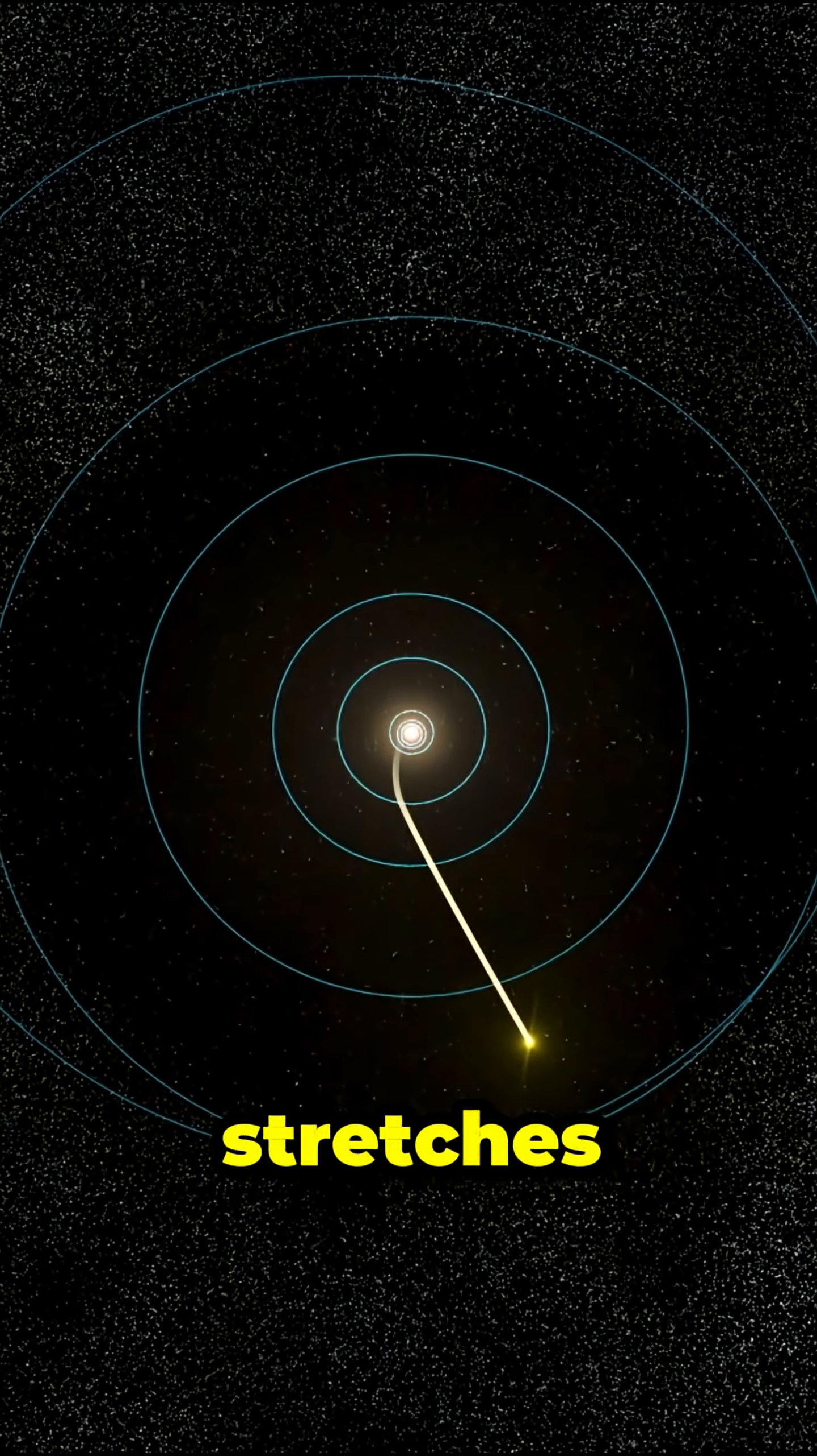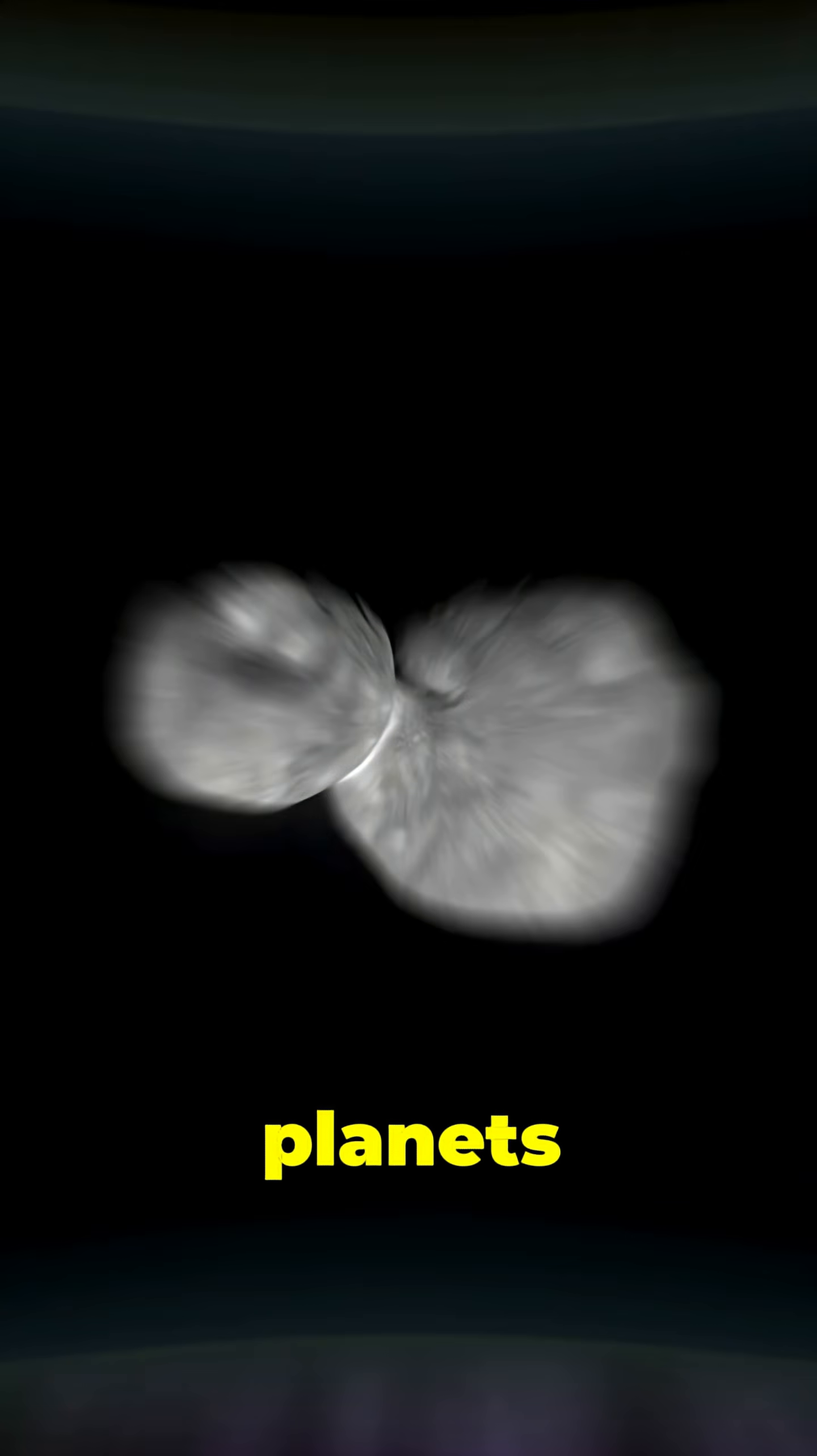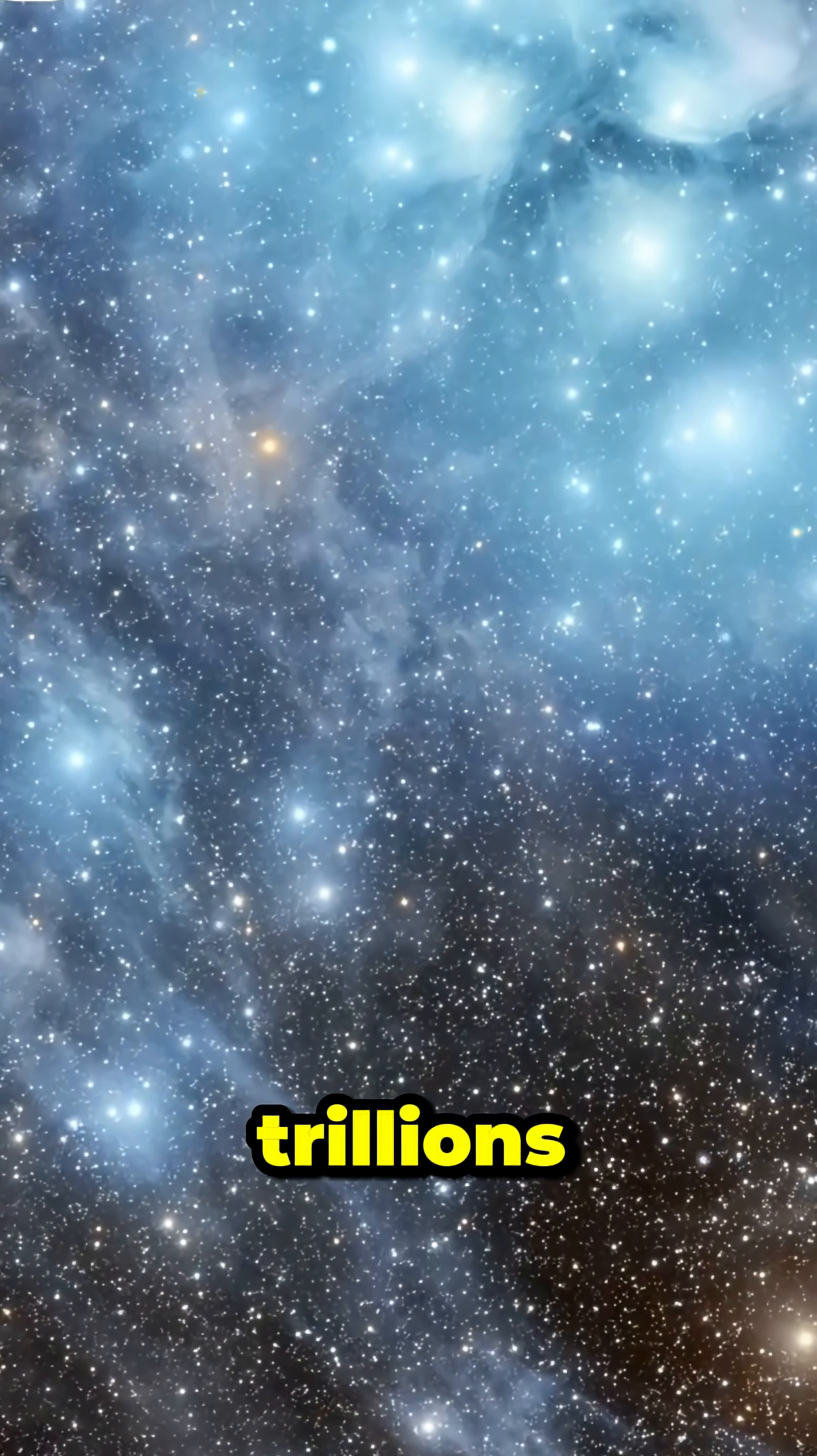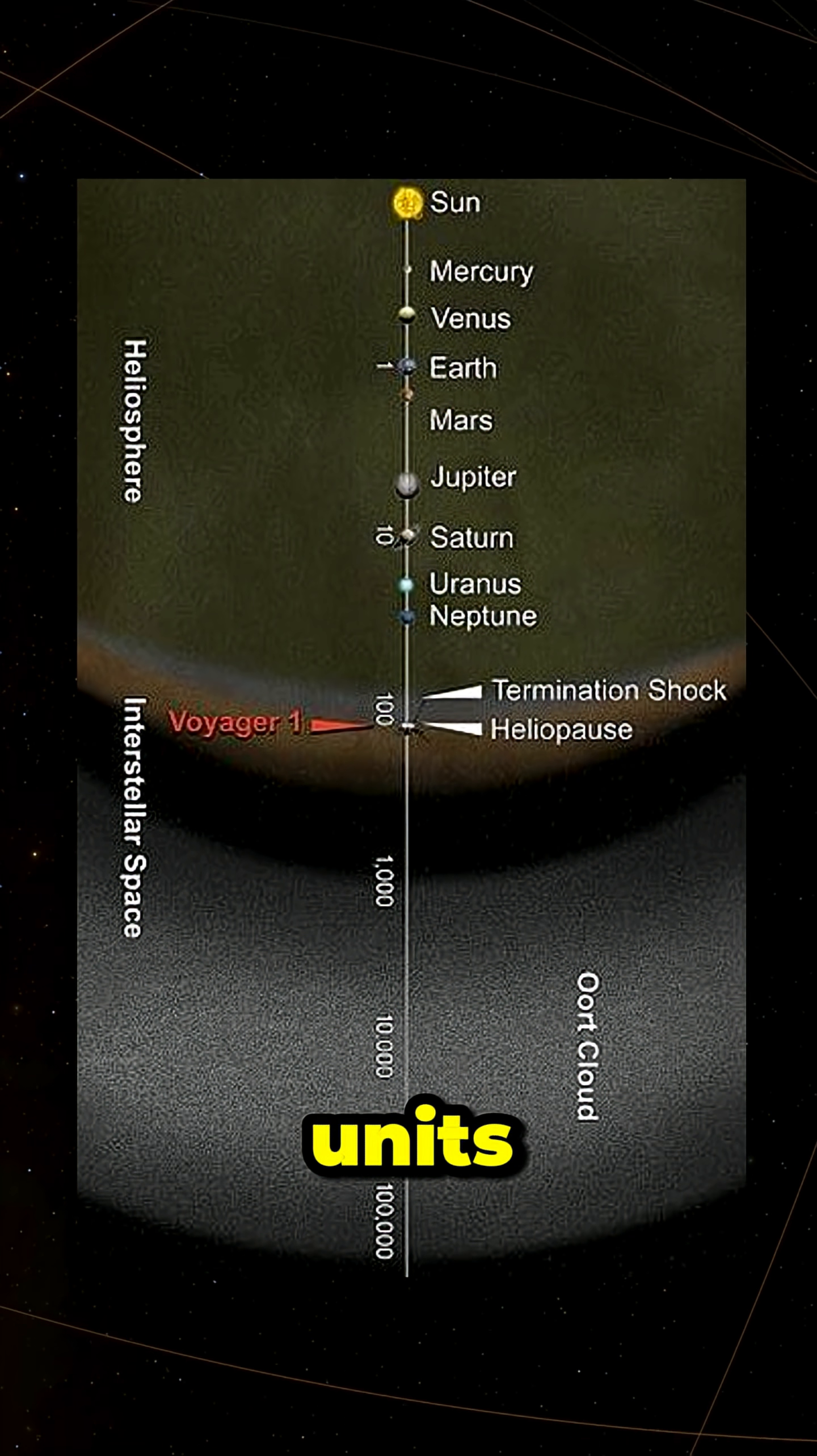The Kuiper Belt stretches 50 astronomical units out, full of icy worlds and dwarf planets. And beyond everything you've heard of is the Oort Cloud, an invisible sphere of trillions of icy objects. It can reach 100,000 astronomical units from the Sun.